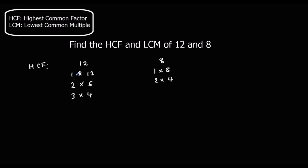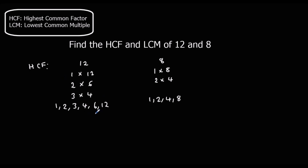So the factors of 12 are 1, 2, 3, 4, 6, and 12. And the factors of 8 are 1, 2, 4, and 8. So the highest common factor — the highest number in both of these — is 4. So the HCF, the highest common factor, is 4.